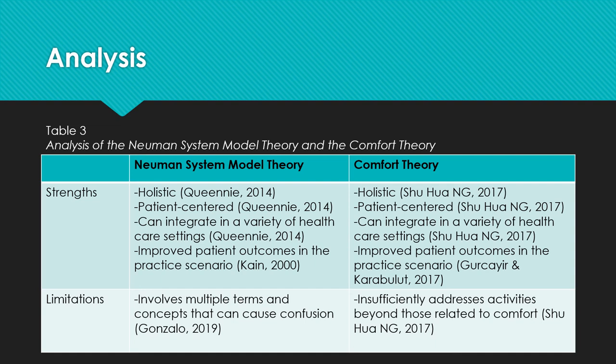Strengths and limitations of the two theories are displayed in Table 3, where both the Newman System Model Theory and the Comfort Theory are holistic and patient-centered theories that are easy for nurses to integrate into a variety of health care settings. An identified limitation of the Newman System Model Theory is that it involves multiple terms and concepts that can cause confusion, making it difficult for nurses to apply into practice. An identified limitation of the Comfort Theory is that it insufficiently addresses activities beyond those related to comfort that can also improve patient well-being, such as dressing changes.